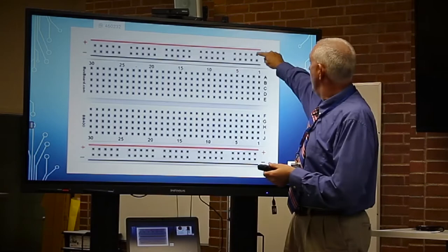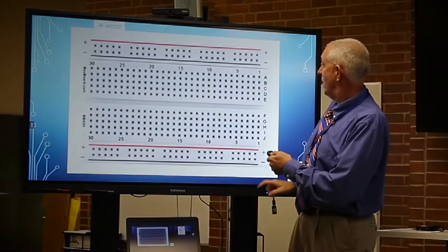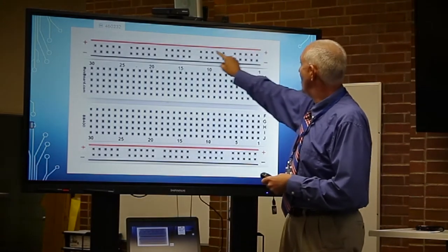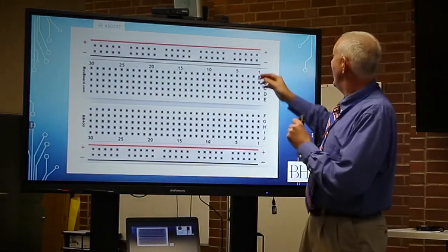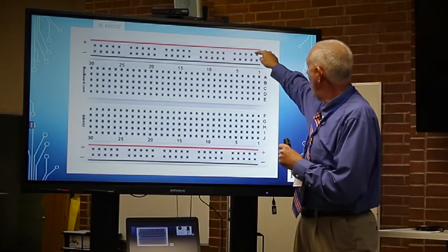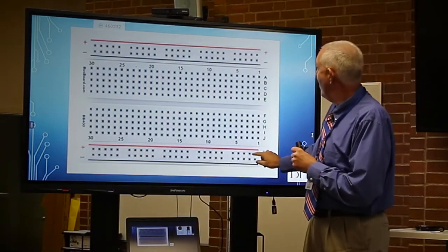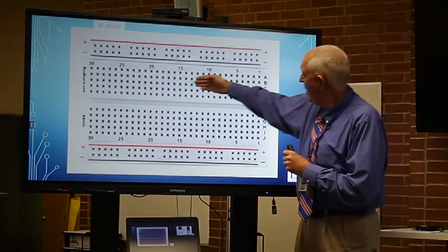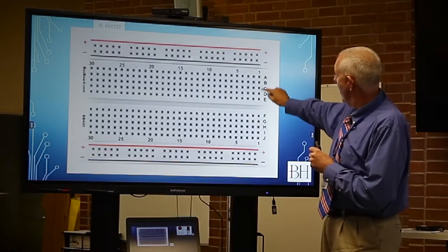If we look at it, this hole right here is connected to this hole right here is connected to that hole right there. So electrically, we can combine things. If we put power to here, we can pull power from there. Same way with down here, we have negative. Now here we have two sets of holes. These are connected electrically.